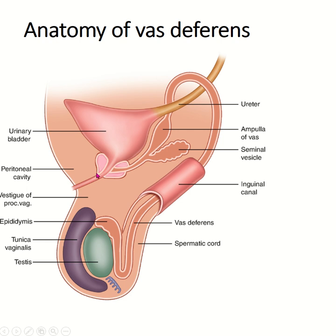It unites with the seminal vesicle to form the ejaculatory duct, which opens into the posterior wall of the prostatic urethra. The ampulla of the vas deferens is a dilated terminal portion that unites with the seminal vesicle to form the ejaculatory duct. Part of the vas deferens is present outside the abdominal cavity, and part is present within the abdominal cavity, passing through the inguinal canal.